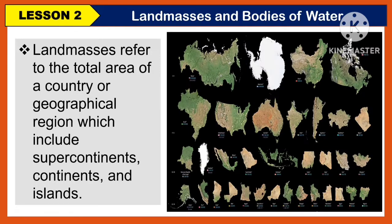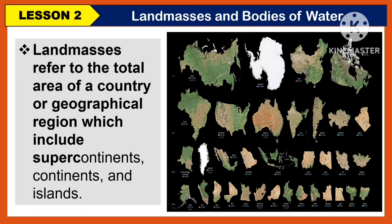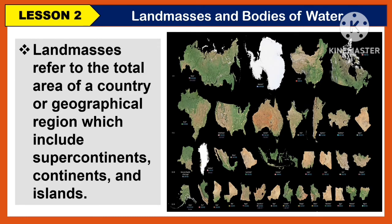Now let us proceed to lesson 2, which is all about the landmasses and the bodies of water. Landmasses refer to the total area of a country or geographical region, which includes supercontinents, continents, and islands.